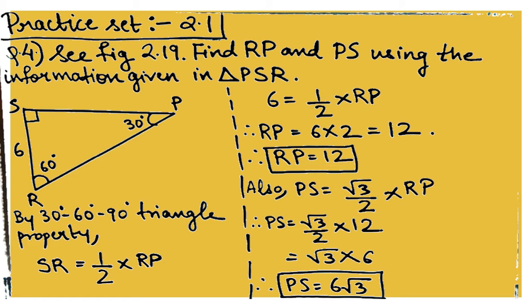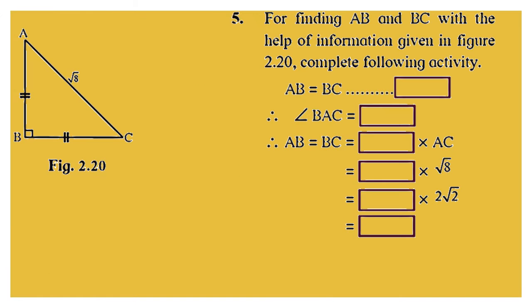Question 5 is a fill-in-the-boxes activity. Find AB and BC using the information in figure 2.20. Here triangle ABC has angle ABC = 90 degrees, hypotenuse AC = √8, and AB and BC are congruent sides. So this is an isosceles right-angled triangle.